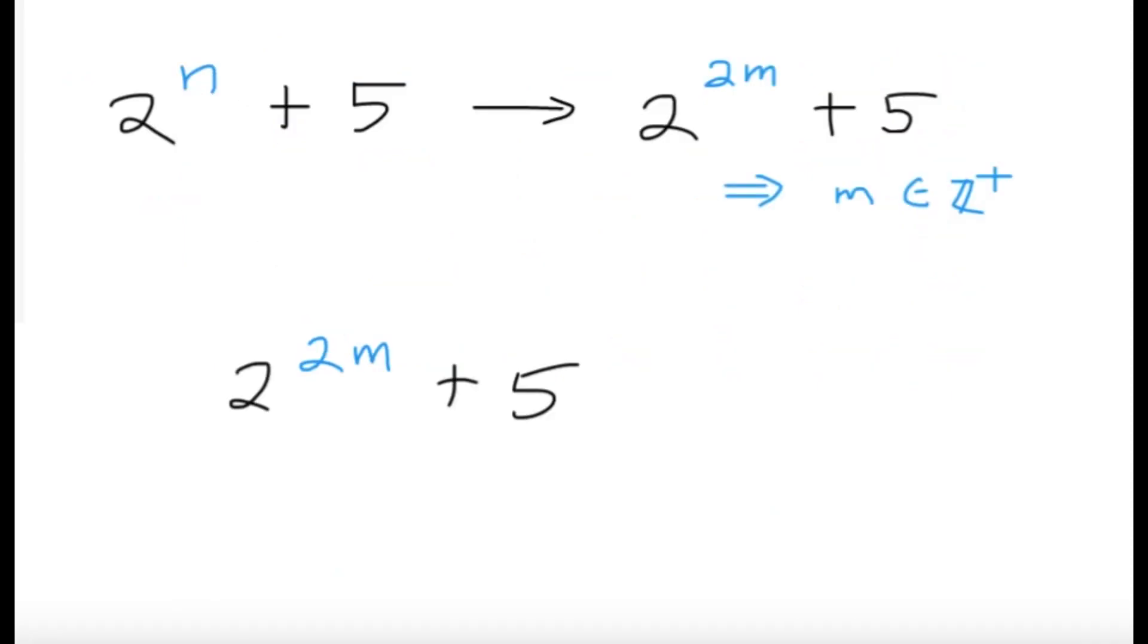After we get that n is even, we have the nice observation here, because 2 raised to n plus 5 becomes 2 raised to 2m plus 5. Again, making the substitution n is equal to 2m. Typical substitution, because now we know that n must be even. So m is a positive integer, just to state it here.